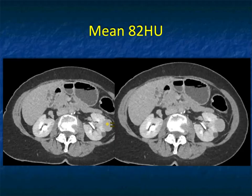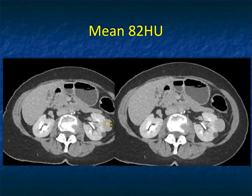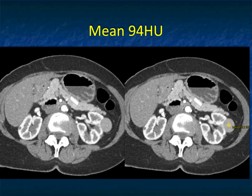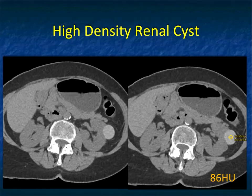It's very well-defined, and if you go to the delayed phase imaging, it's 82. So you have a mass, 2 centimeters plus, measuring in the 80 Hounsfield unit range that doesn't change. If you only looked at the excretory phase, you would say this is a solid mass, 82 Hounsfield units, likely a papillary renal cell carcinoma. If you looked only at the arterial phase, you would say there's a solid mass measuring 94, renal cell carcinoma. This is the challenge.